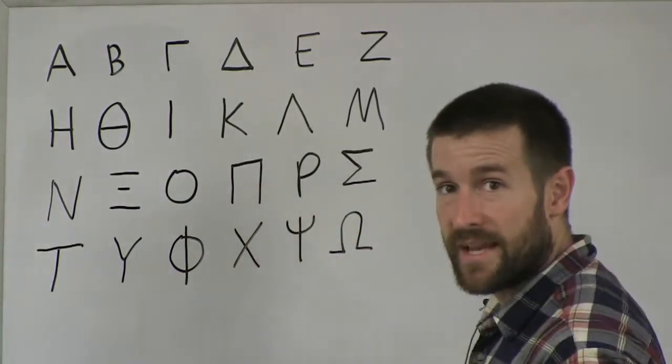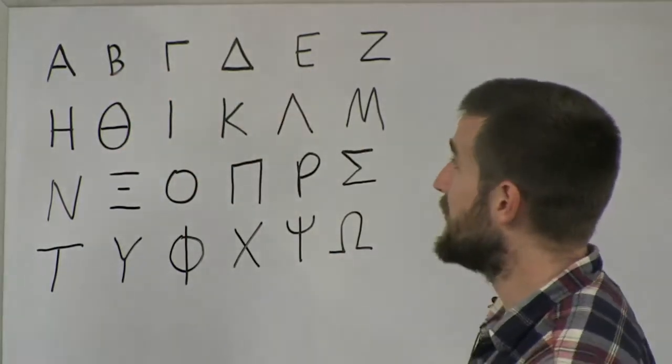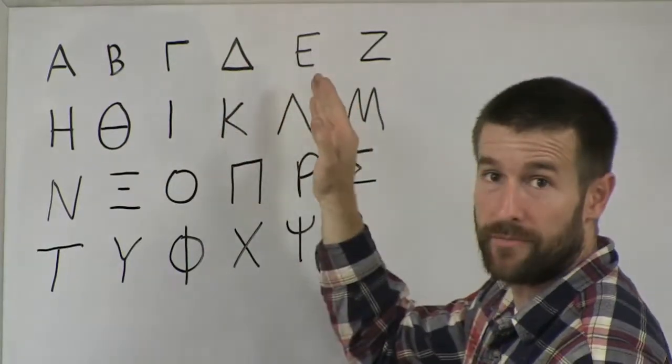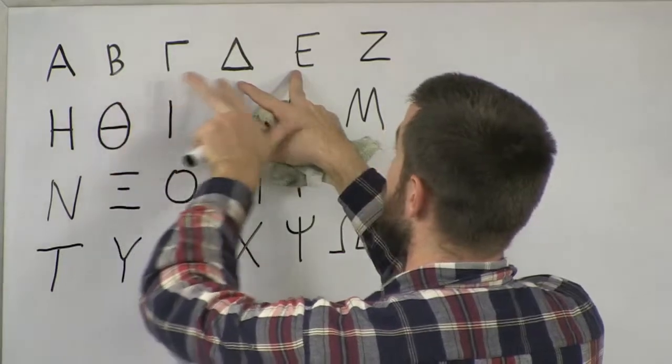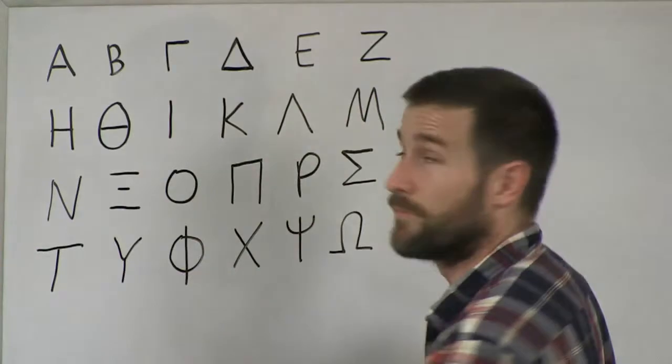And if you remember, the way that I memorize this is I break it down into sections. The first five is one section. Alpha, Vita, Gamma, Delta, Epsilon. Okay? Because, again, the order is pretty similar to our English order, A, B, C, D, E, even though the words, or the letters, are a little bit different.